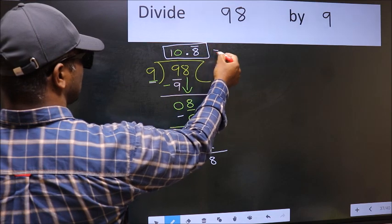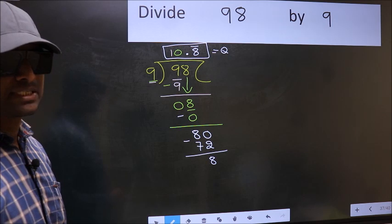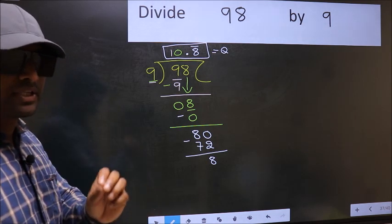So this is our quotient. Did you understand where the mistake happens? You should not do that mistake.